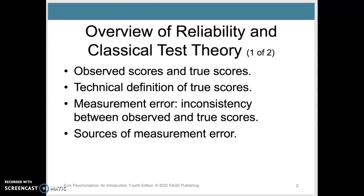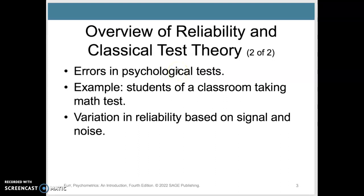In classical test theory, the main assumption is that there are observed scores and true scores, and the difference between the observed score and the true score is measurement error. The assumption is that there is error in psychological tests, and that if we have different tests, we can figure out how big that error is.